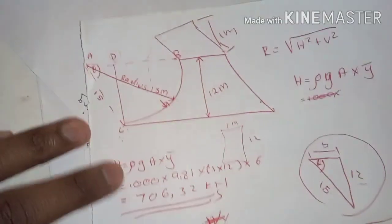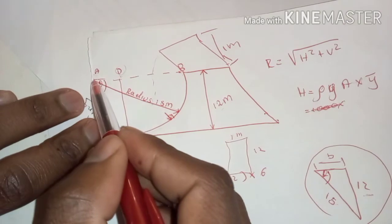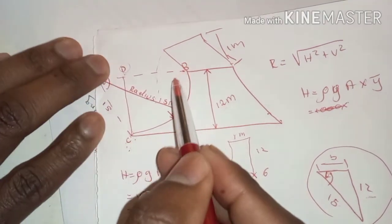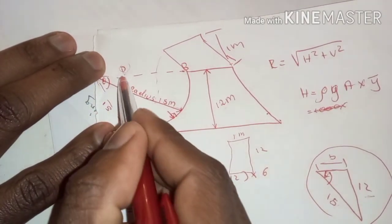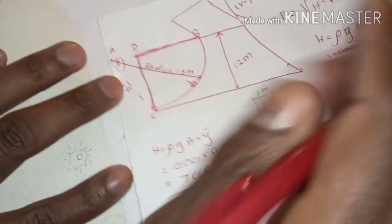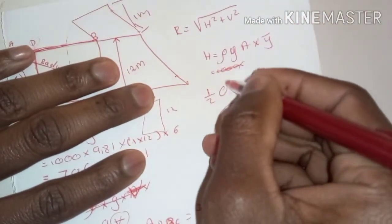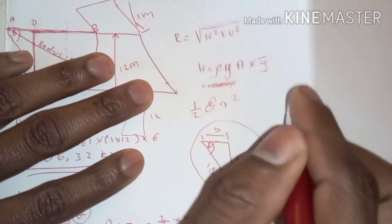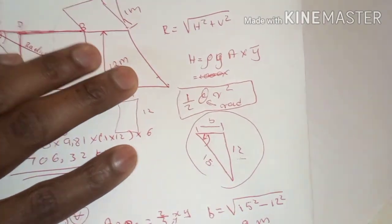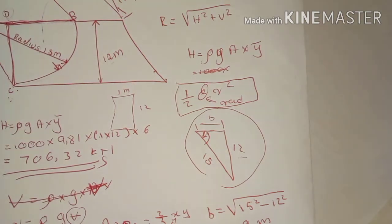The key takeaway from this exercise is that even when given a curved structure, the area we always focus on is the projected area of the water volume. When a direct formula isn't available, means must be found to calculate that area — such as using the sector area formula ½θr², where θ must be in radians, not degrees. I'll see you in the next lesson.